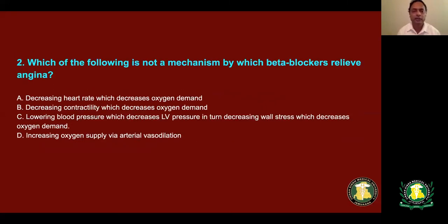Which of the following is not a mechanism of beta blockers? Options: A — decreased heart rate and decreased oxygen demand; B — decreased contractility, which decreases oxygen demand; C — lowering blood pressure, which decreases LV pressure and wall stress; D — increased oxygen supply by reflex vasodilation. The answer is D — this is not a mechanism of beta blockers. Options A, B, and C are all mechanisms of beta blockers.